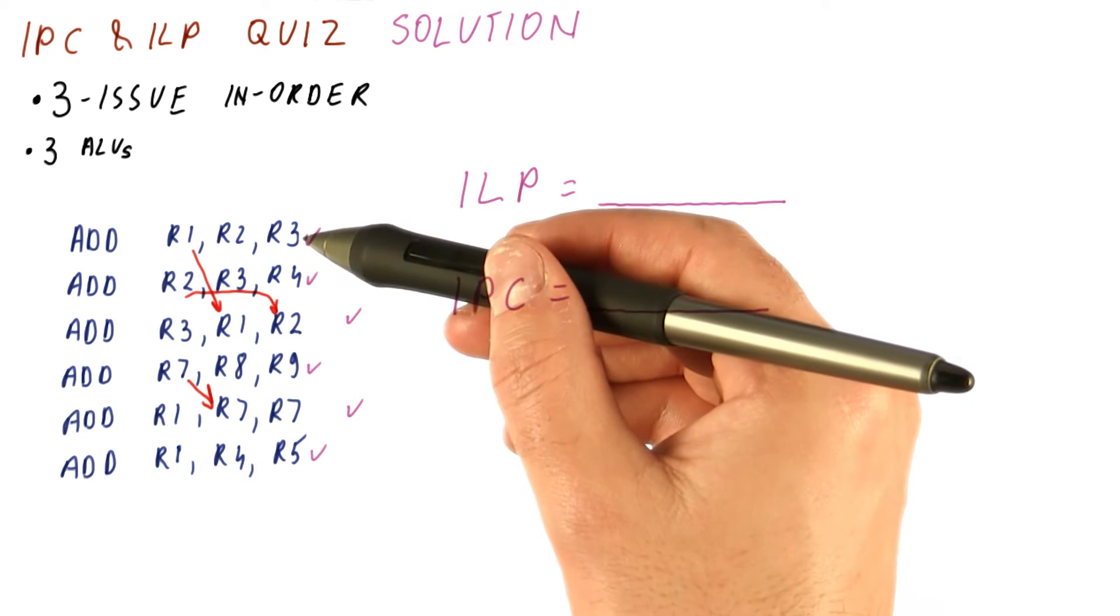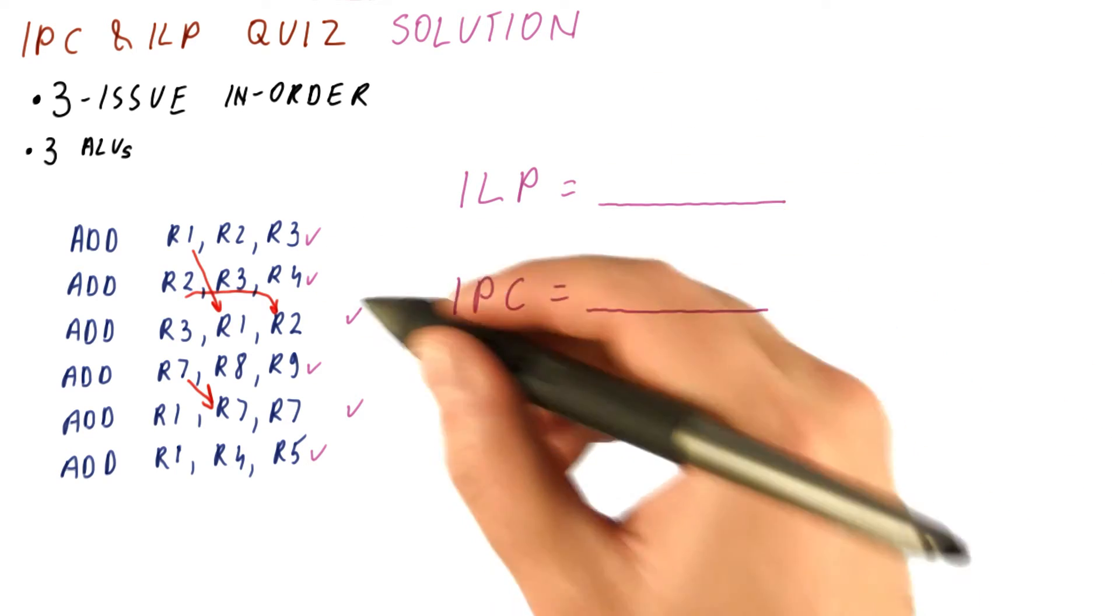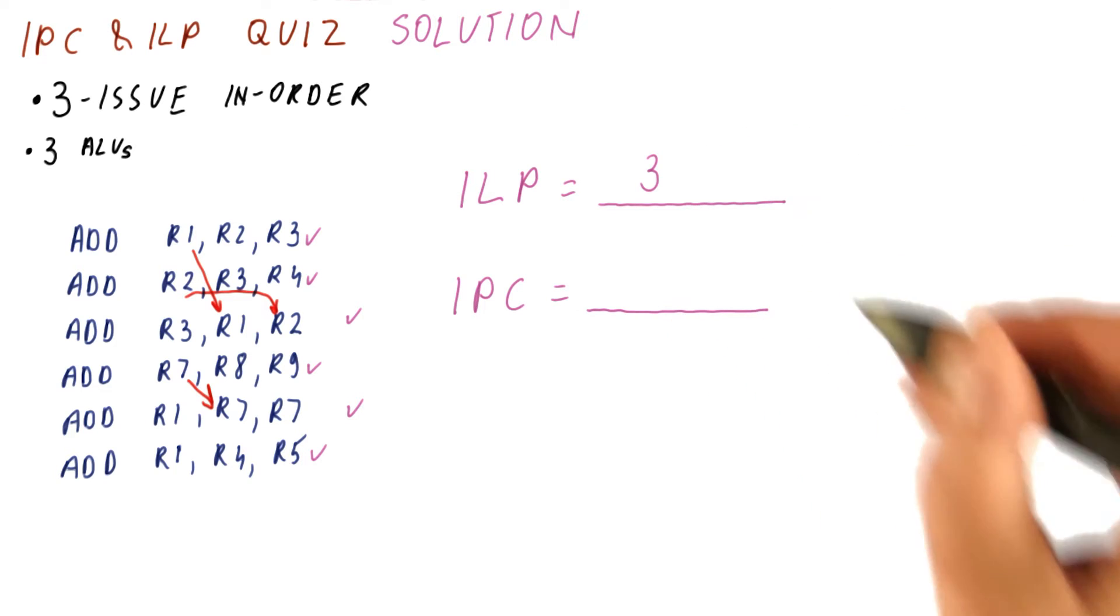So as far as ILP is concerned, we have a total of six instructions executed over two cycles. So the ILP is going to be three.